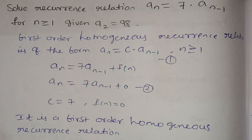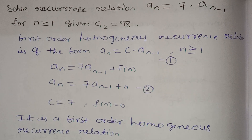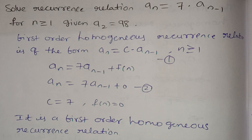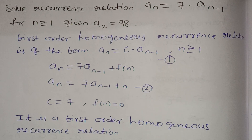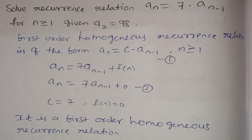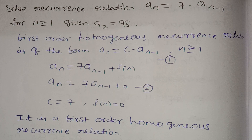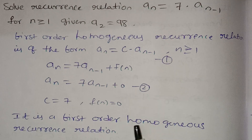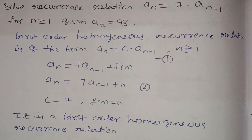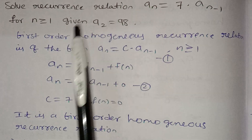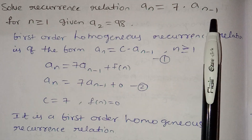Now we have questions about homogeneous, first order and second order. First order homogeneous recurrence relation — I am going to show you that it is easy to find a solution in this video. I am going to repeat this basic information. Okay, solve the recurrence relation: aₙ equals 7 into aₙ₋₁.